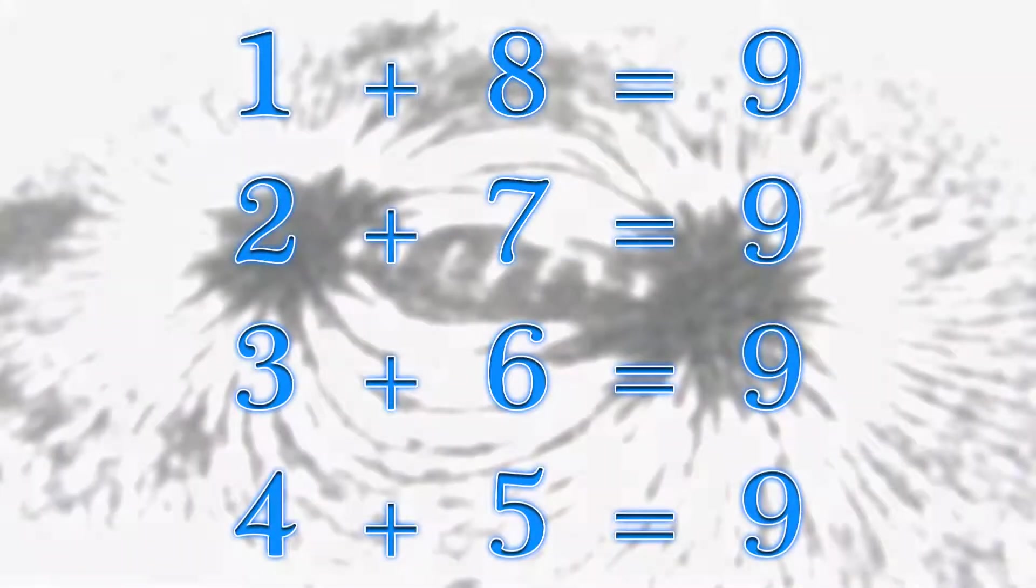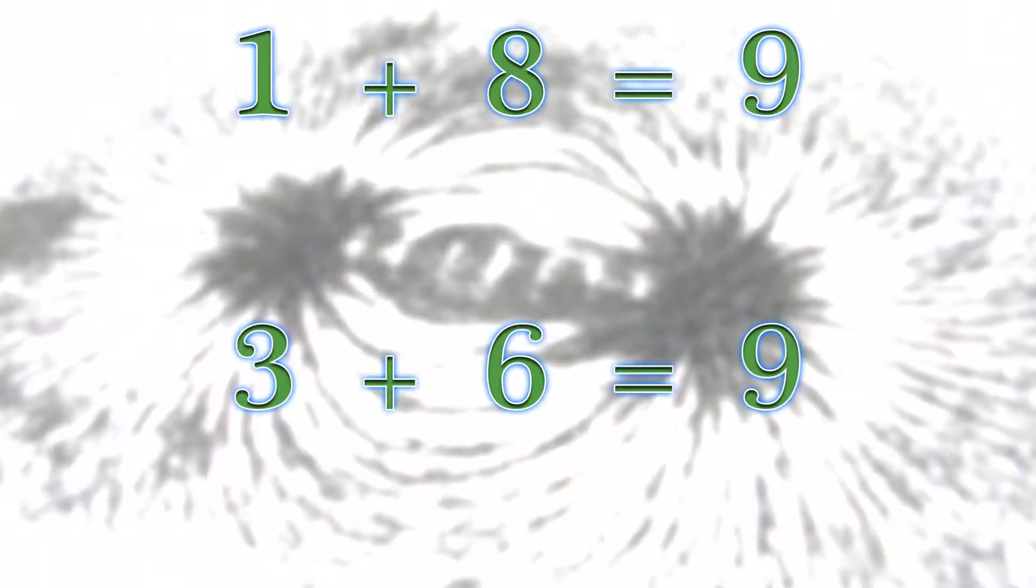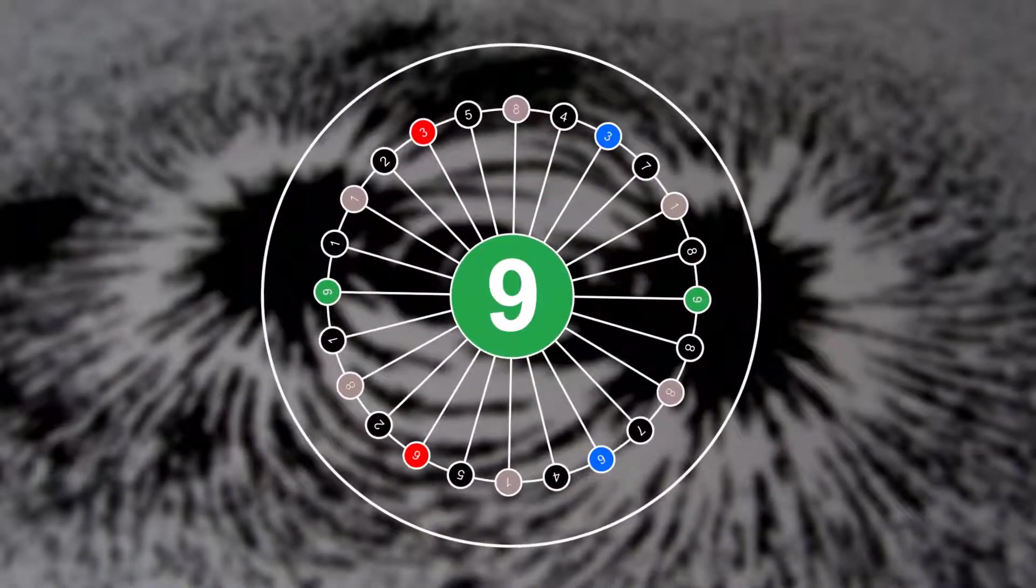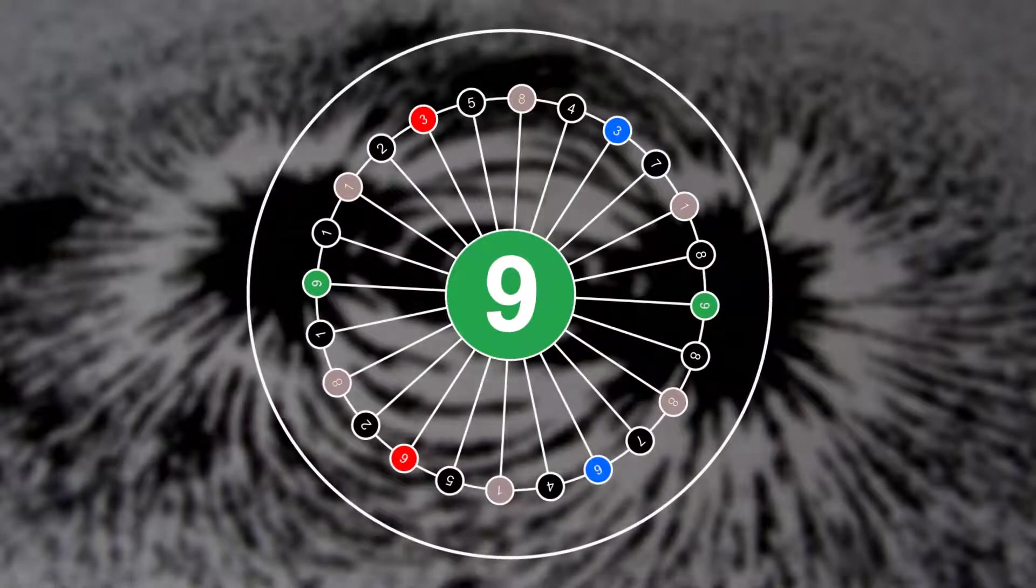Another number pair that seems to represent the scaffolding or structure is one and eight. According to the Fibonacci number spiral, one and eight also represent the structure in between the rest of the numbers.